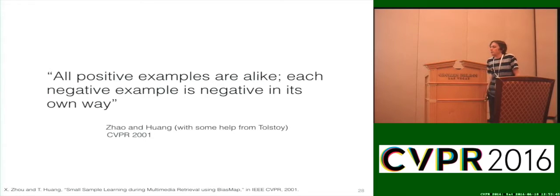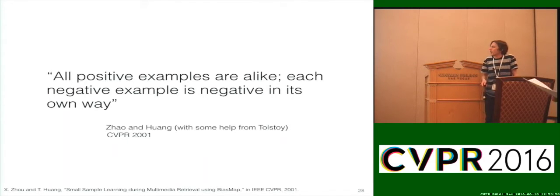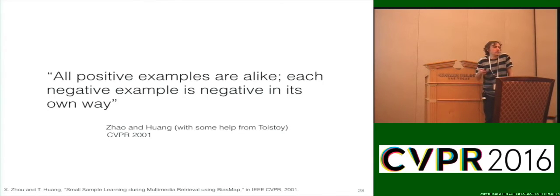Coming back to the idea of negative sampling: binary classifiers are better for this problem than single one-class classifiers. But there's the question of the negatives. There's a great quote from a classic CVPR 2001 paper from Tom Moone's group, adapted from the opening line of Anna Karenina by Tolstoy: 'All positive examples are alike; each negative example is negative in its own way.' This hints at the idea that you don't have a good idea of what everything else in the world looks like, and there will be a lot of peculiarities in individual classes that you can't model when doing negative class sampling — it's intractable.